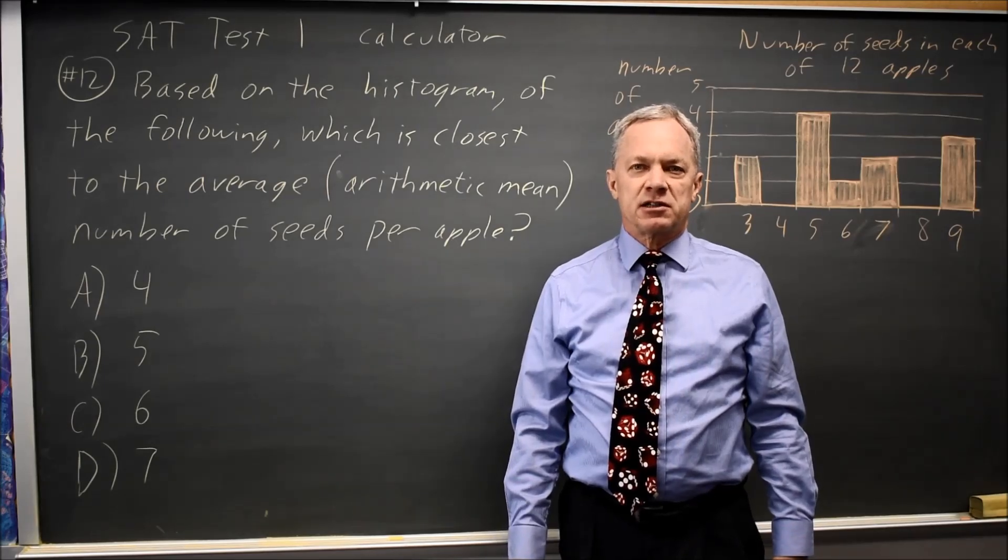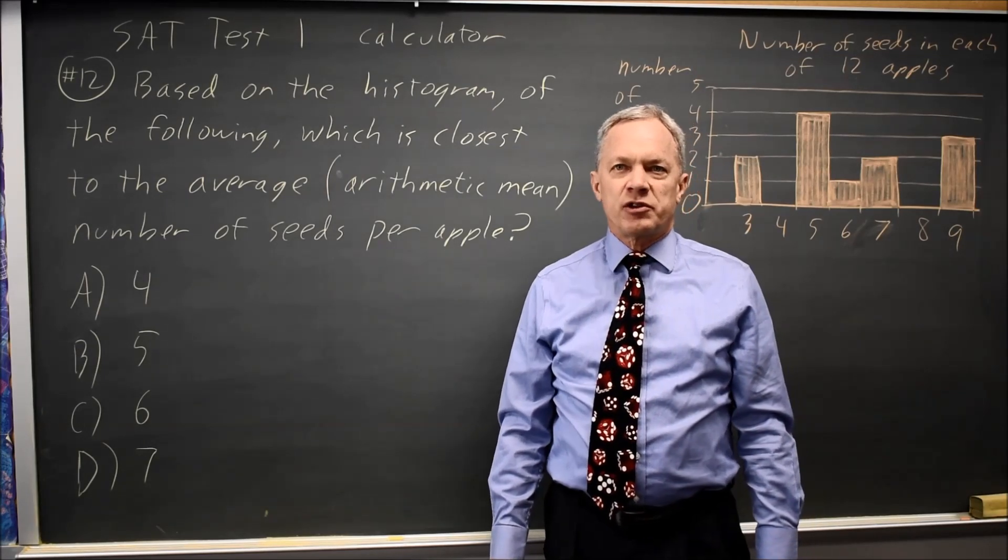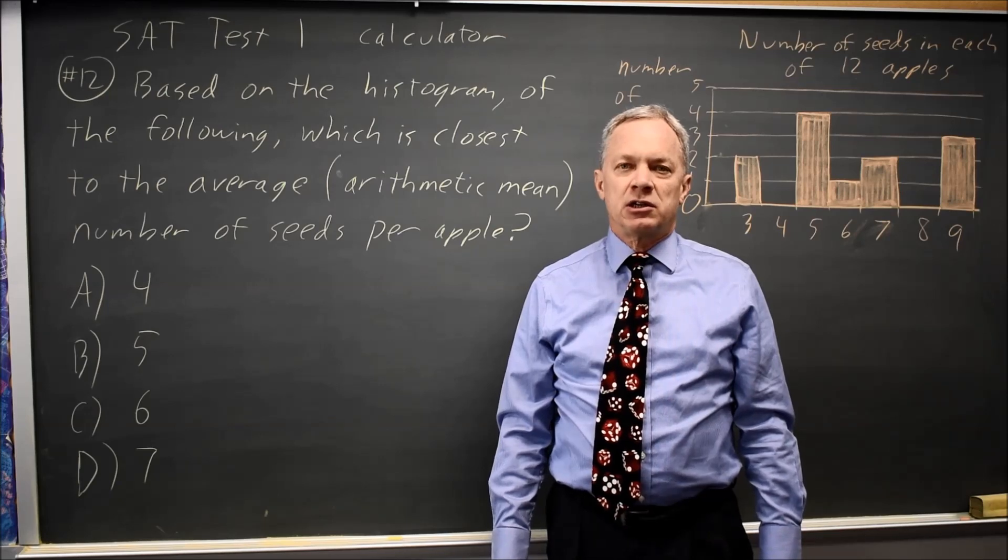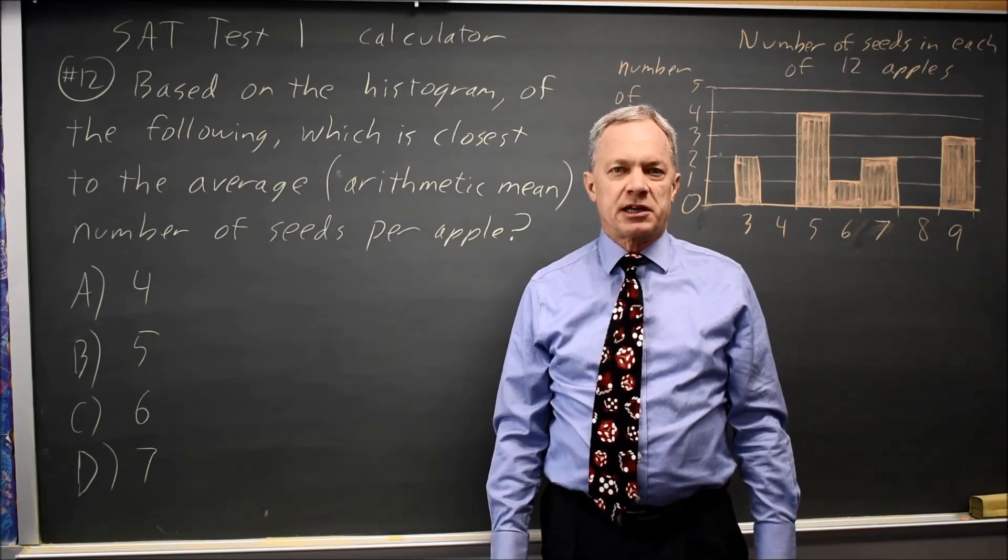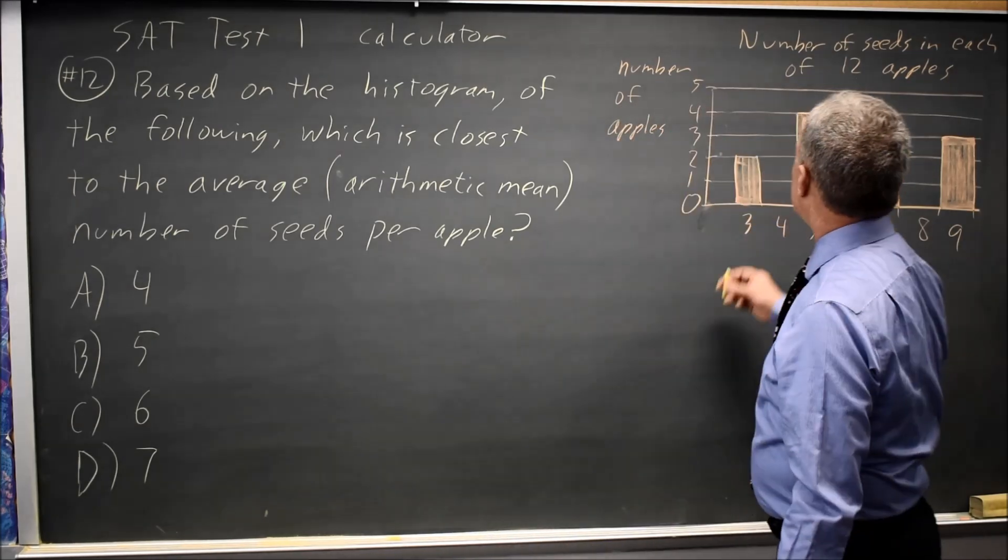This is SAT Test 1, Calculator Section Question 12. They give you a histogram and ask for the average number of seeds per apple based on that histogram. So let's take a look at what we have here.